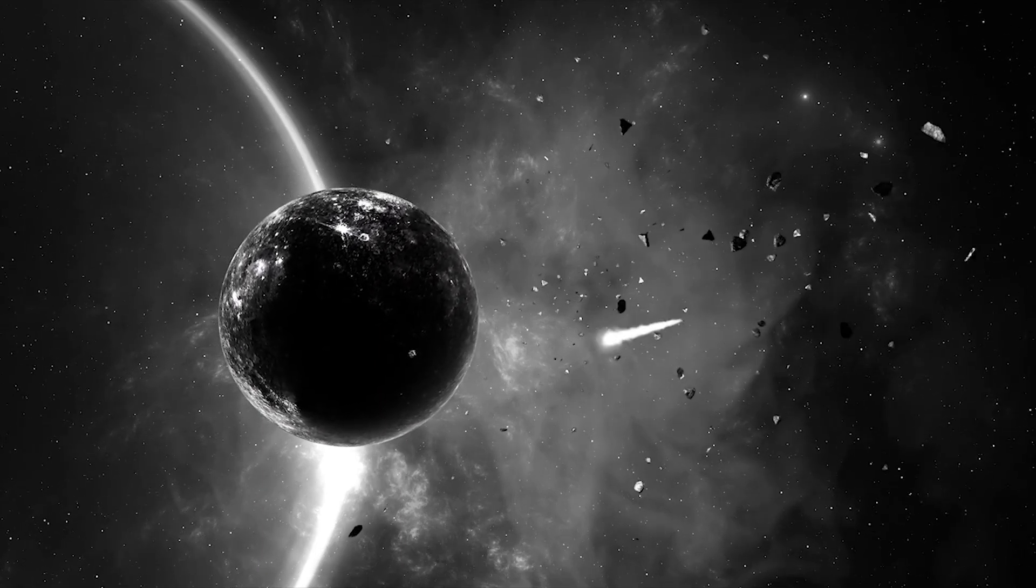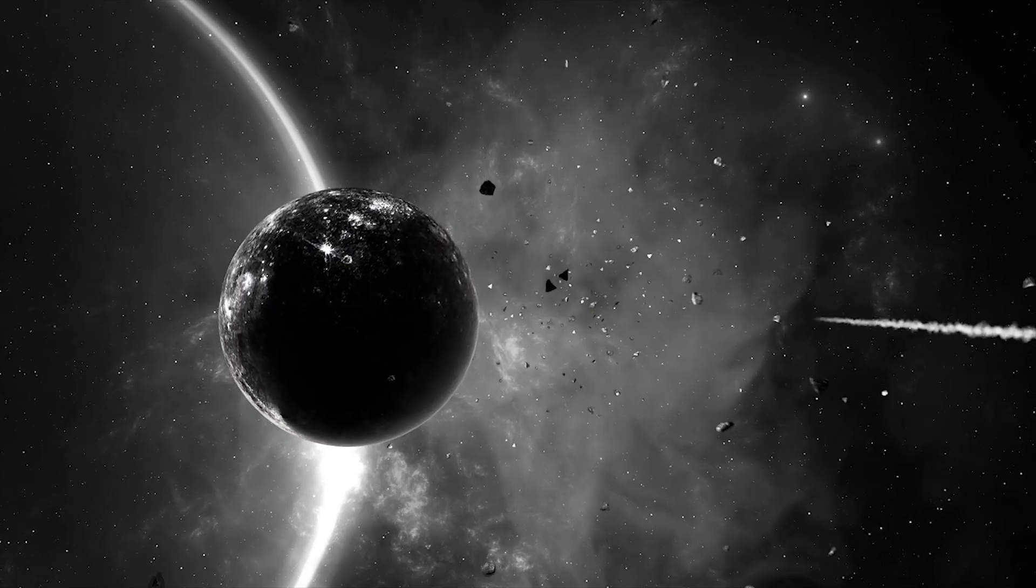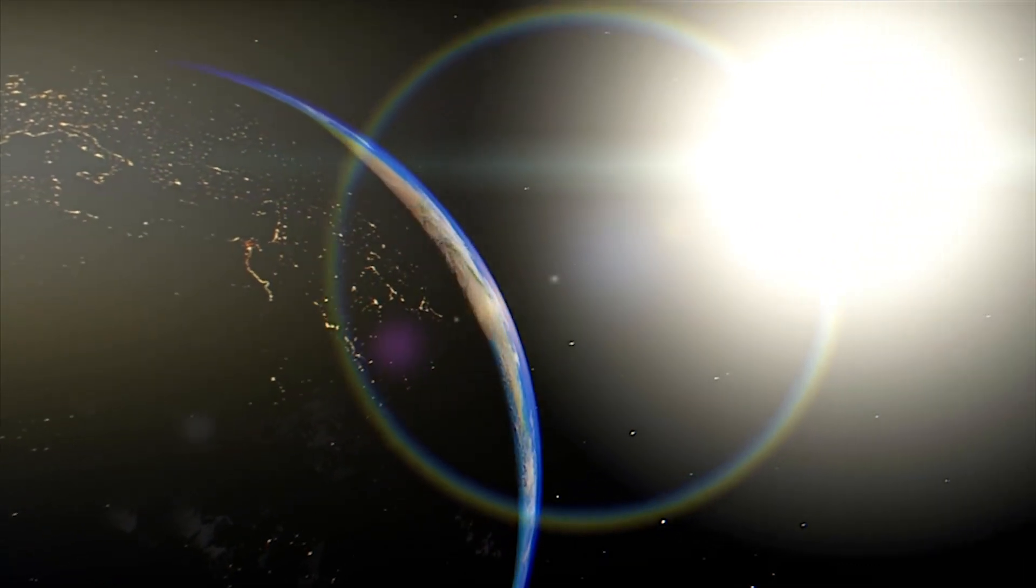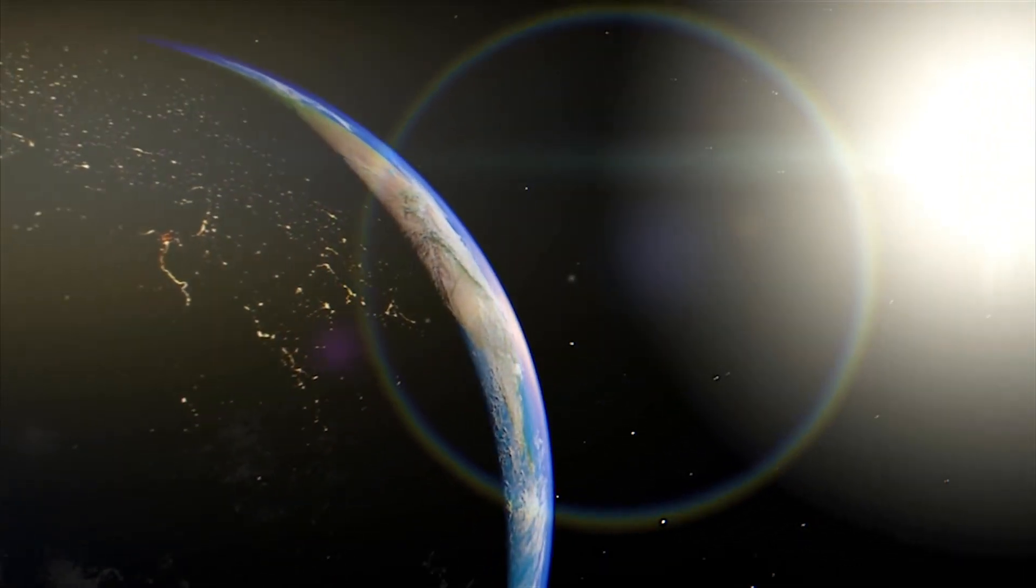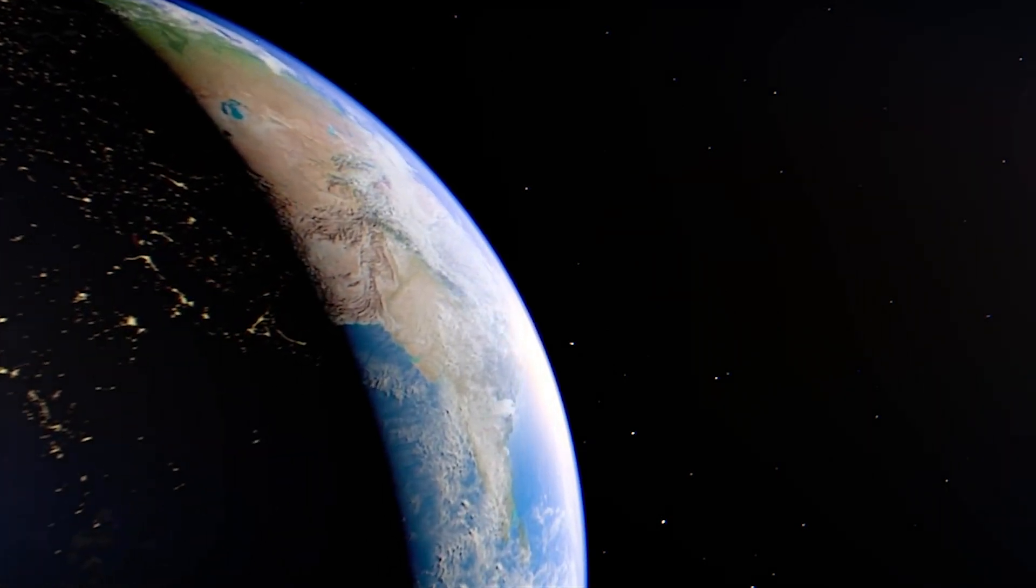Studying Kepler 1658 b as it dies will help explain the life cycles of similar planets. Learning something about the actual physics of how orbits shrink over time, we can get a better handle on the fates of all of these planets.